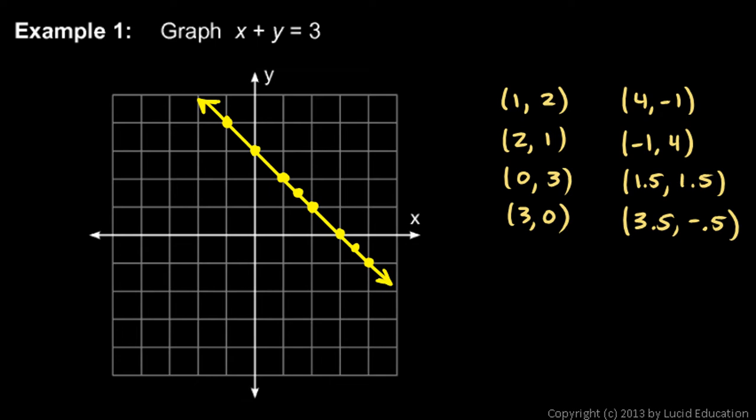Now when we were finding points over here, or finding ordered pair solutions to the equation, we could have kept going. We could have found an infinite number of points. An infinite number of ordered pairs.